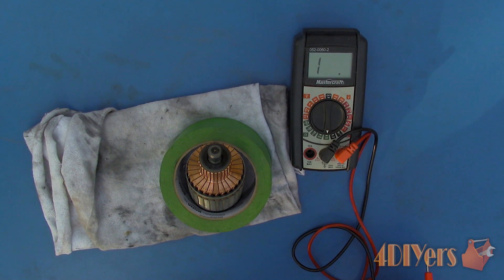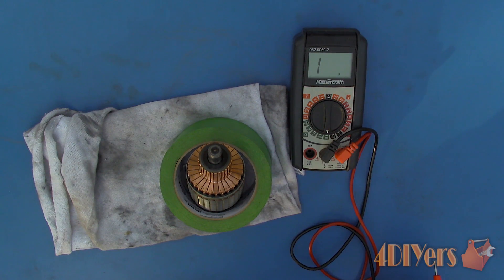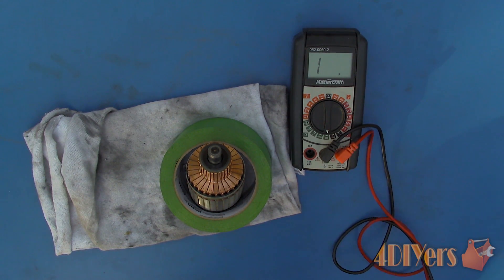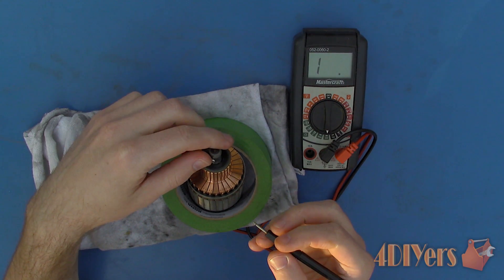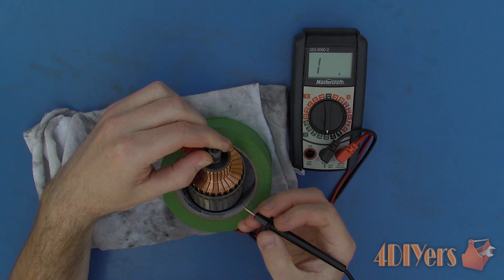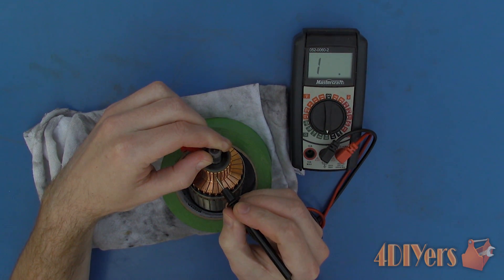Starting with test number one. First we will be doing a continuity test between each of the individual bars and the armature shaft which is ground. We want no continuity between each of the points. Otherwise that will indicate there is a failure in the insulation resulting in a short.